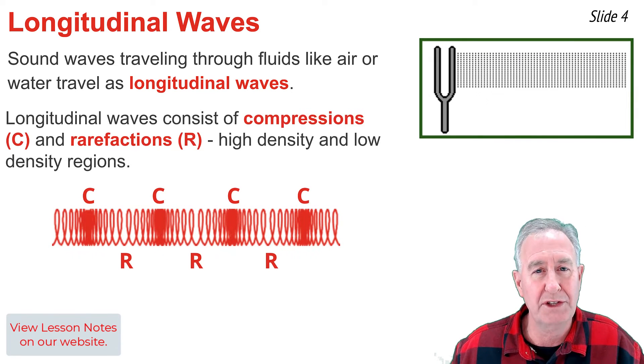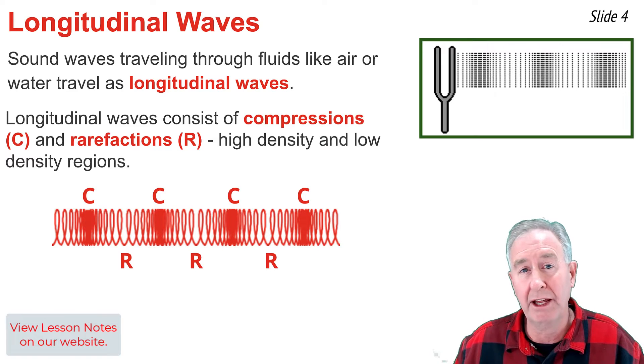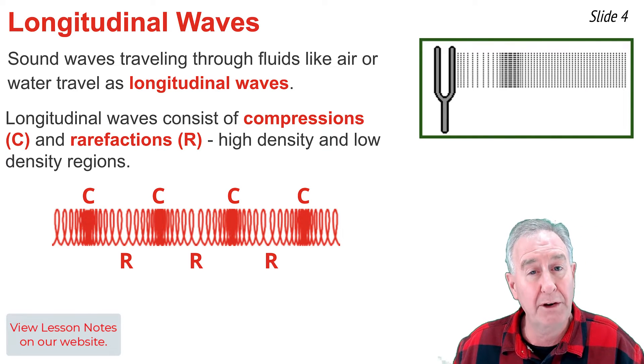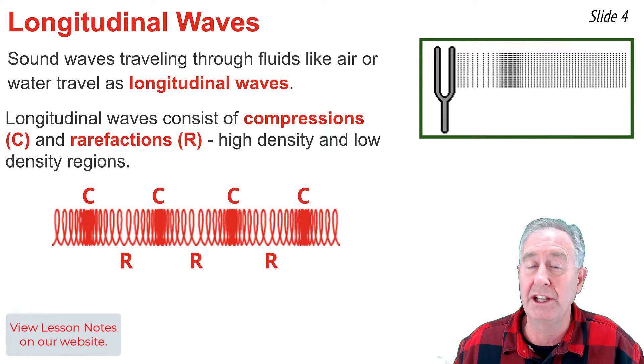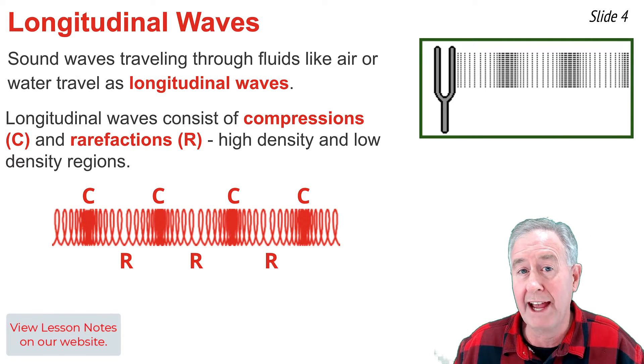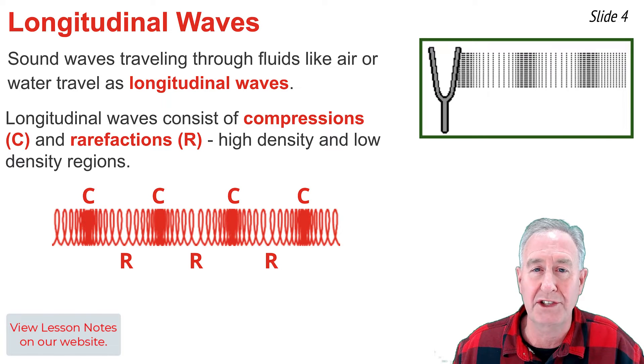Longitudinal waves consist of compressions and rarefactions. Here we see a still frame of a longitudinal wave set up in a slinky. In the areas marked with a C, those are compressions, and the coils of the slinky are densely packed. The areas marked with an R are rarefactions. Those are regions where the coils of the slinky are less densely packed.